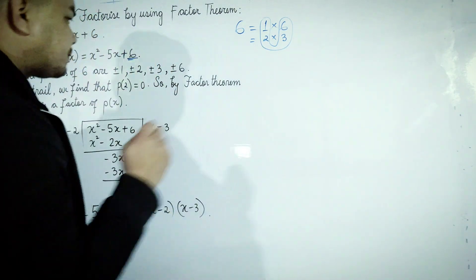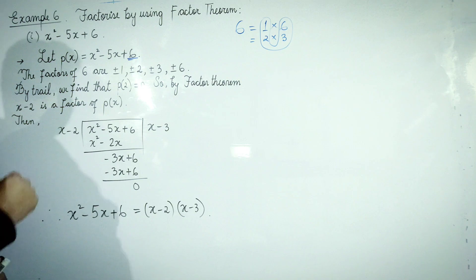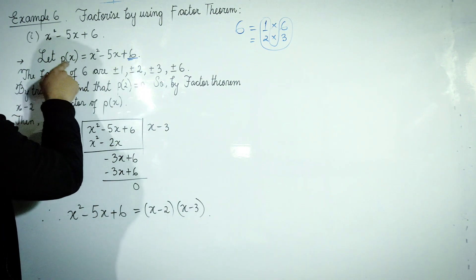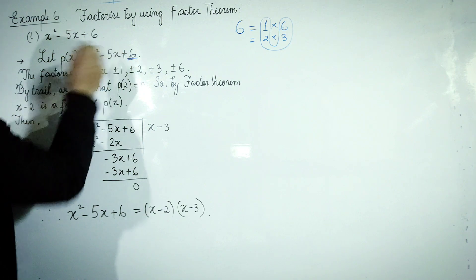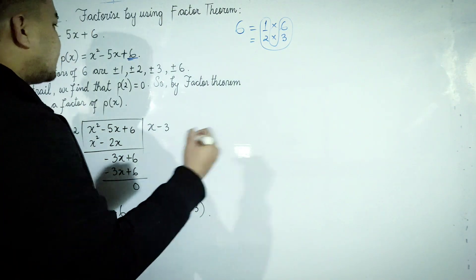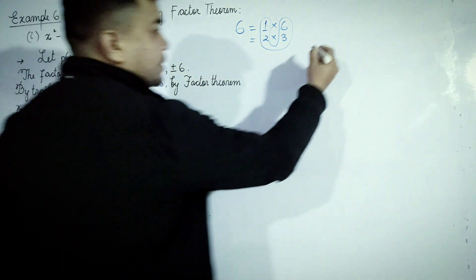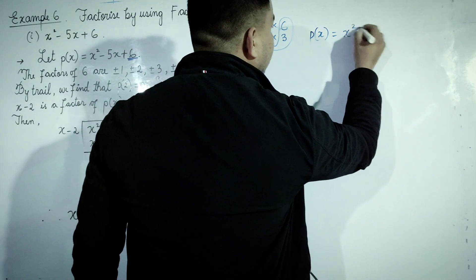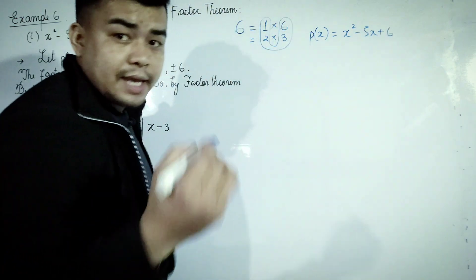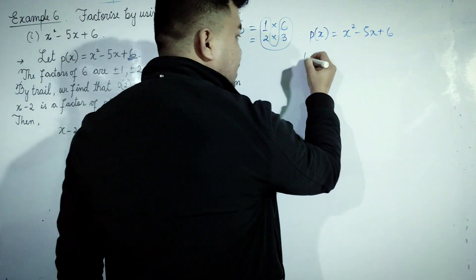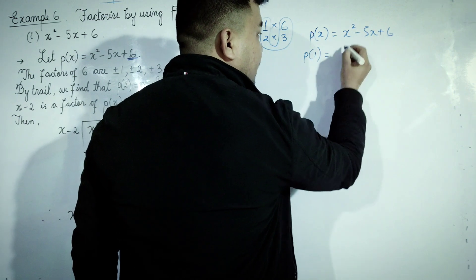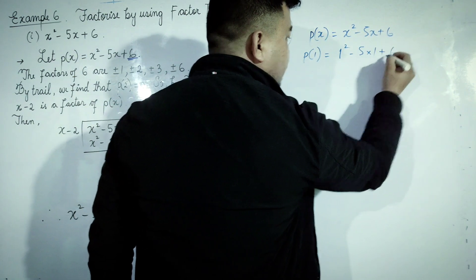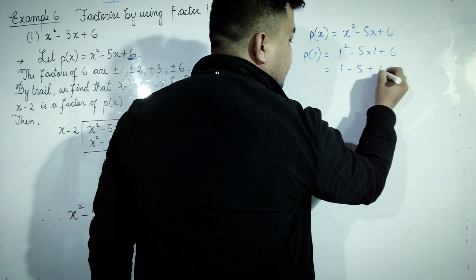We divide 1 into 6. Now let's test x = 1. We substitute x = 1 into P(x): x² - 5x + 6 becomes 1² - 5(1) + 6.